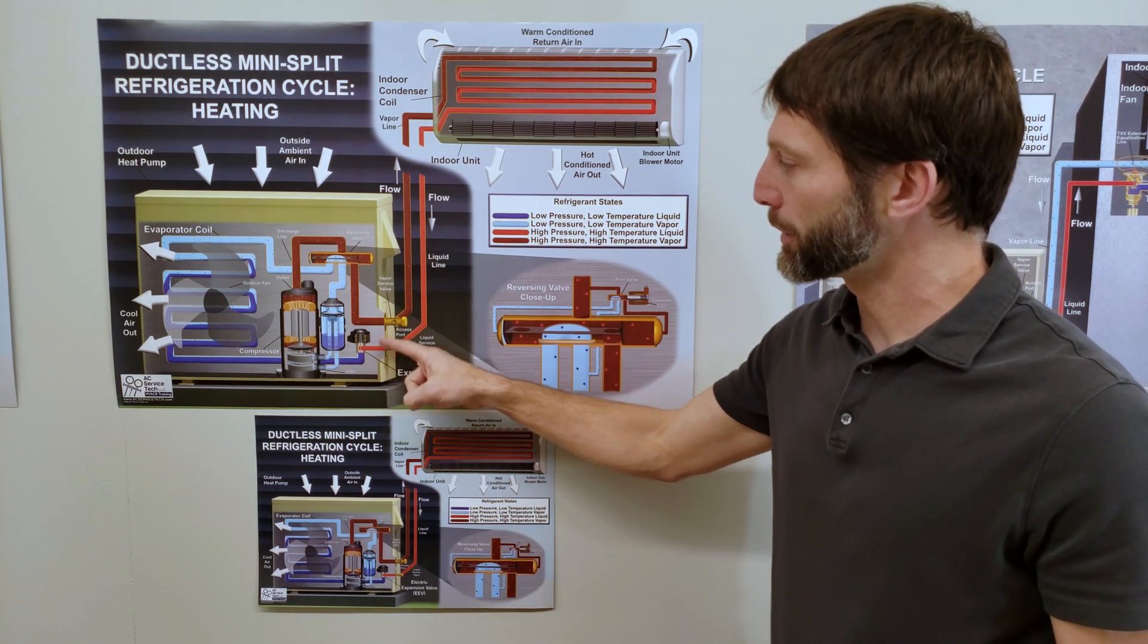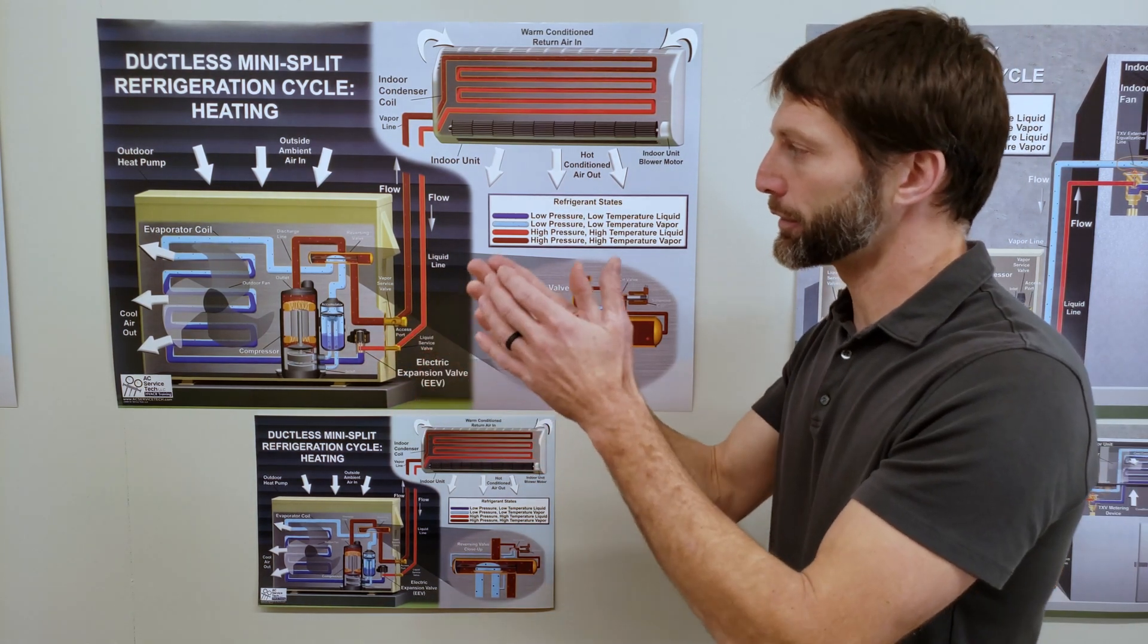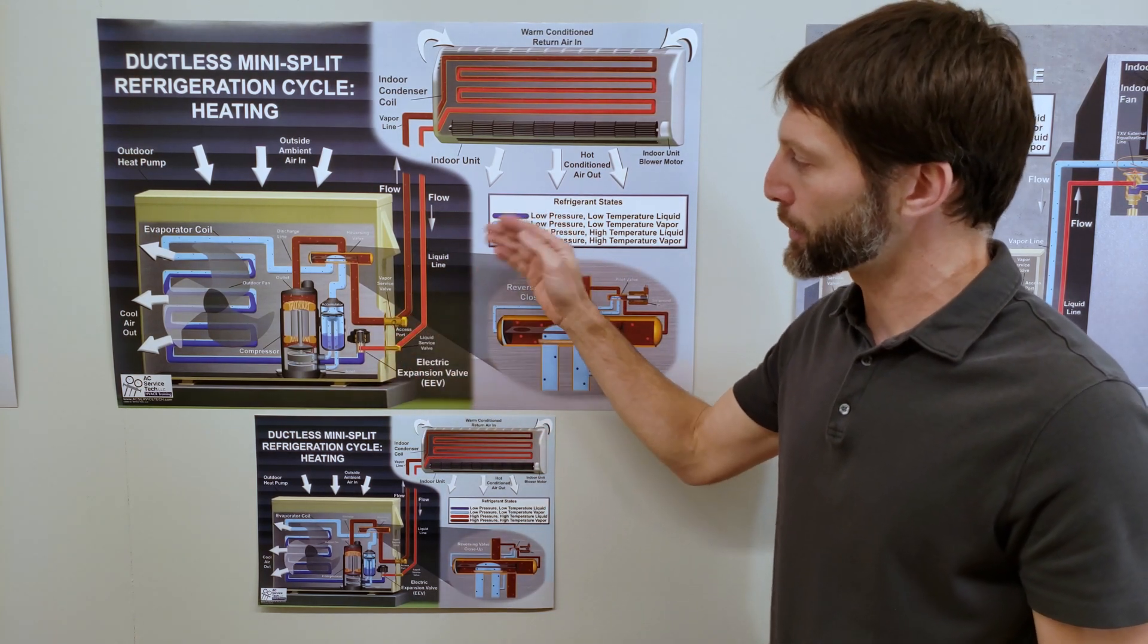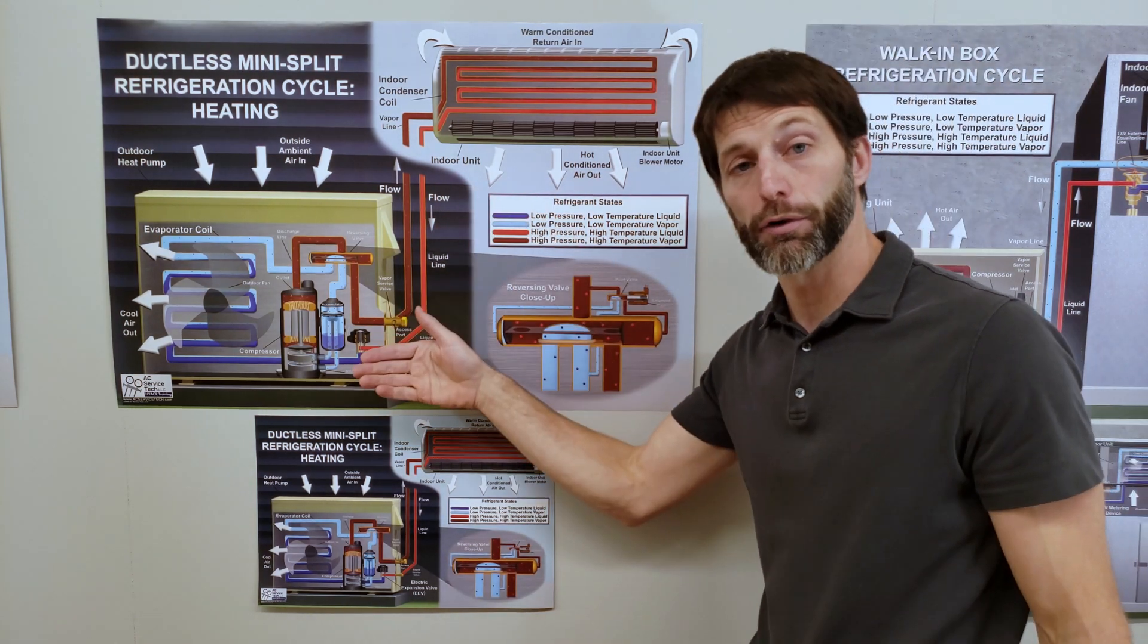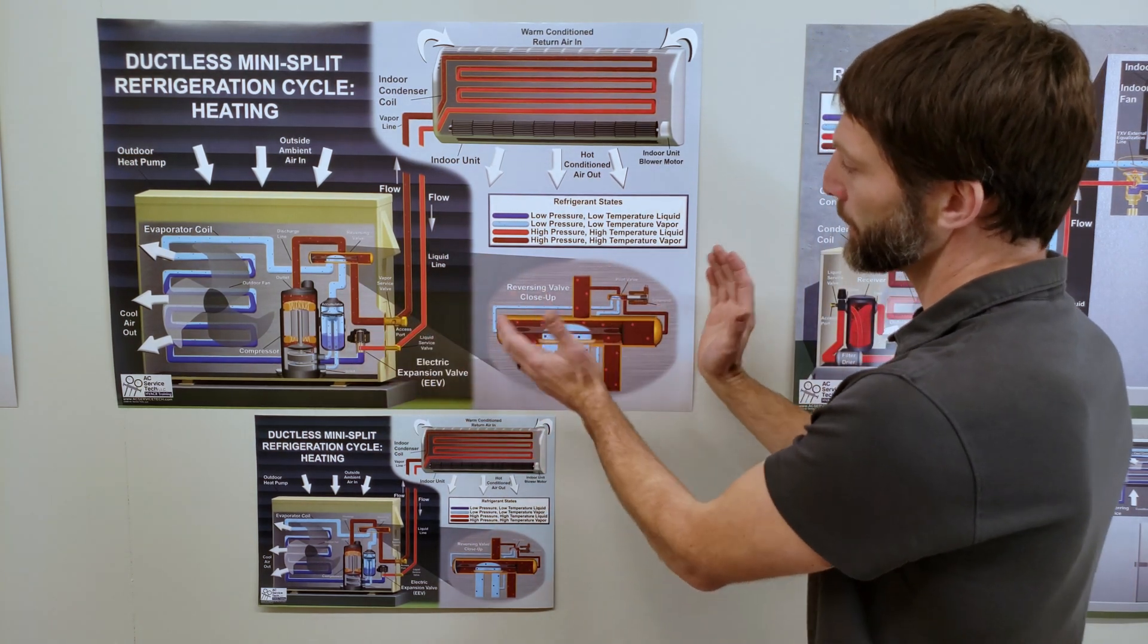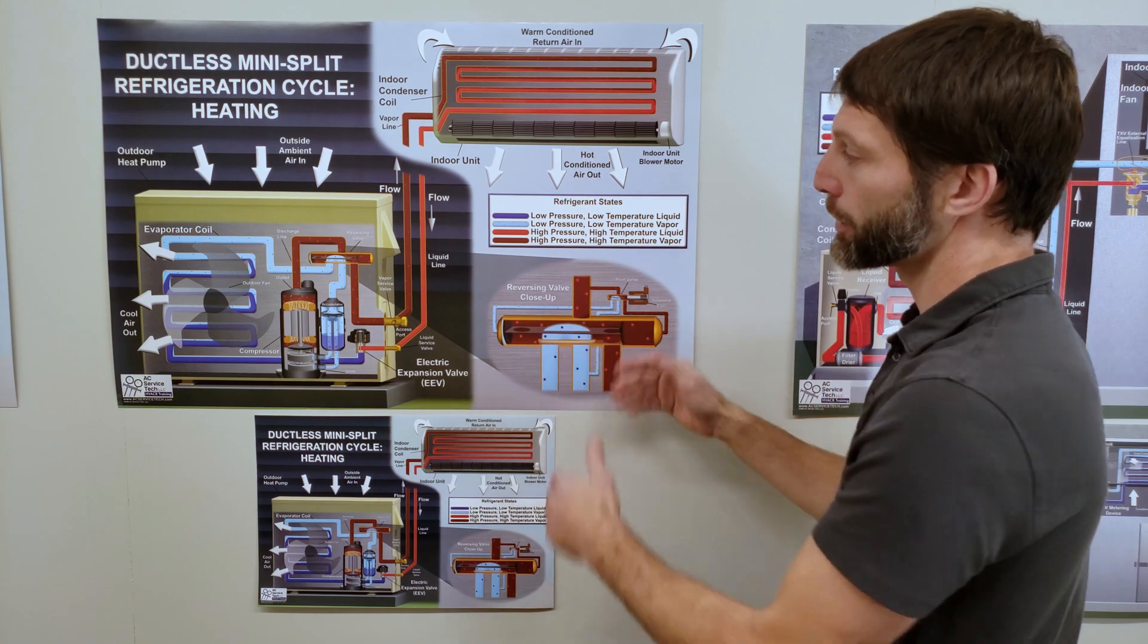Your metering device right here is going to be active whether it's in heating mode or in air conditioning mode. It's just the directional flow of the refrigerant, which way the refrigerant is heading. You want to be able to study this. You want to be able to study the reversing valve in order to know what's happening.